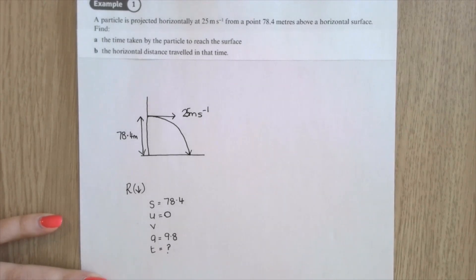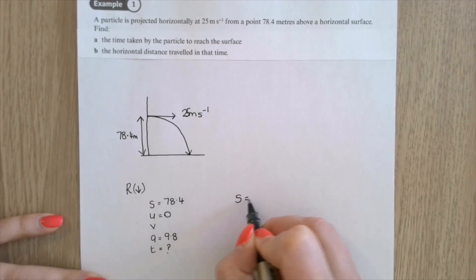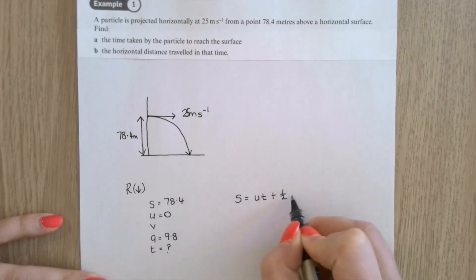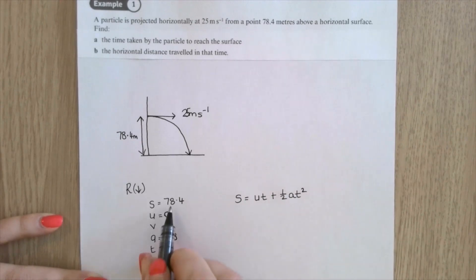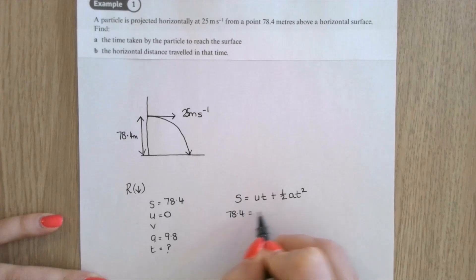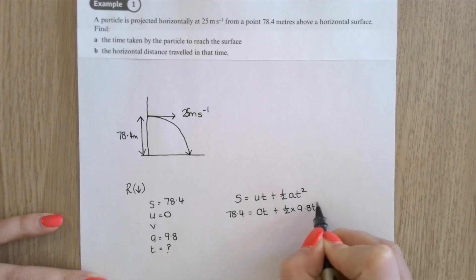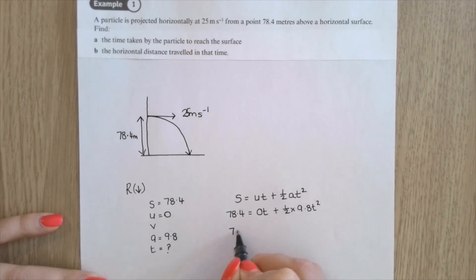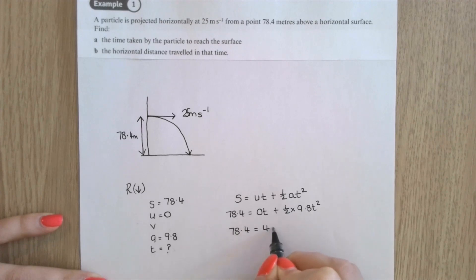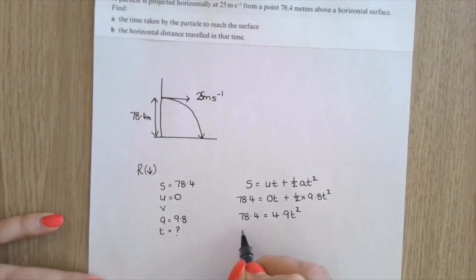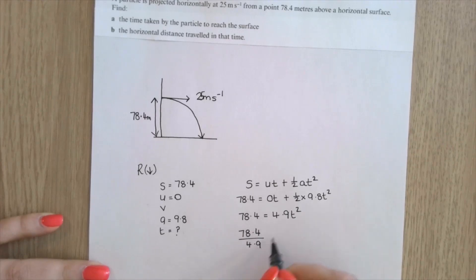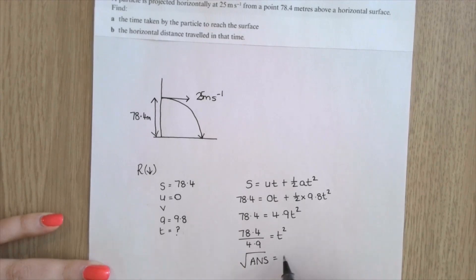Using s = ut + ½at²: 78.4 = 0·t + ½(9.8)t², so 78.4 = 4.9t², therefore t² = 78.4/4.9, and taking the square root gives t = 4 seconds.